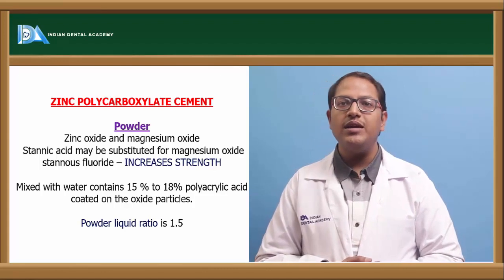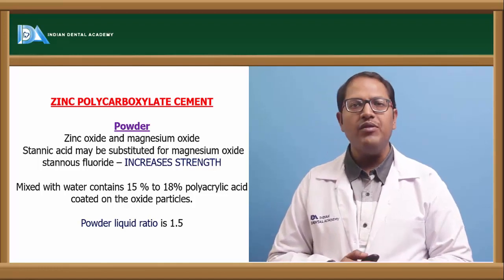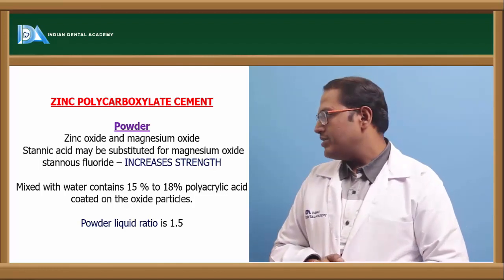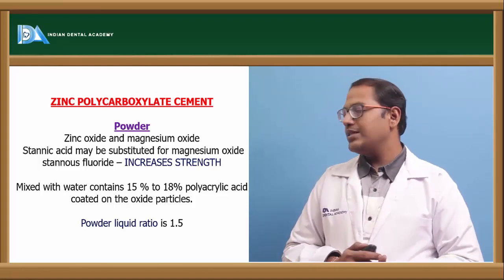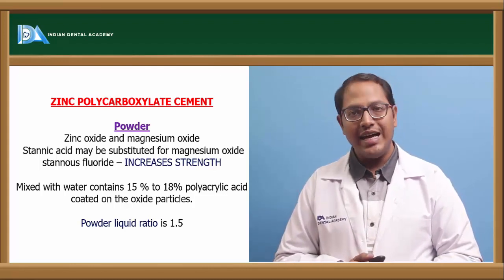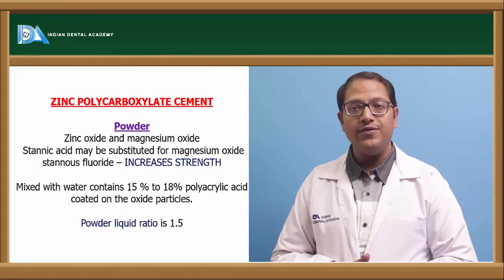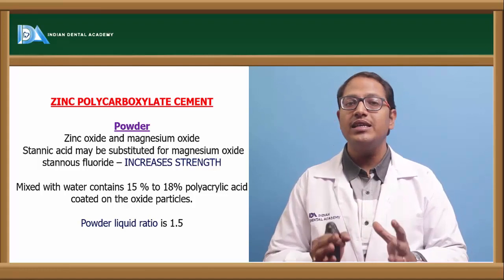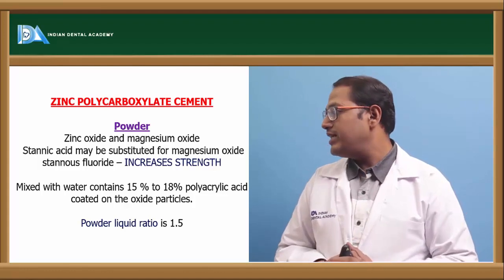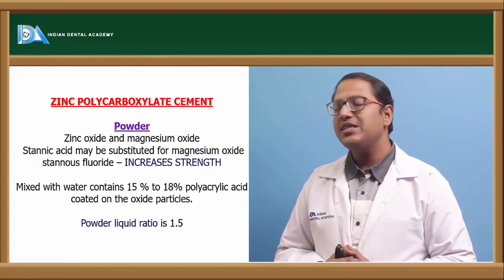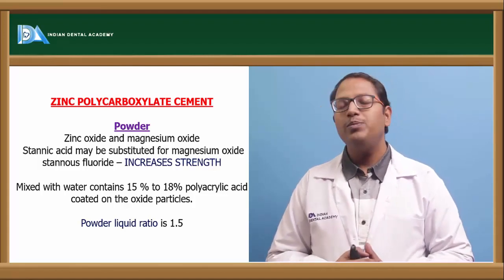Zinc polycarboxylate cement, as the name suggests, contains zinc oxide and polycarboxylic acid. The powder contains zinc oxide, magnesium oxide or stannic acid as a substitute, and stannous fluoride which increases the strength of the cement. The liquid contains 15 to 18% polyacrylic acid, coated with oxide particles. The powder-liquid ratio is 1.5.